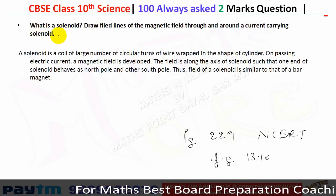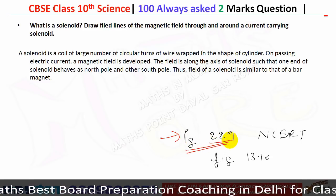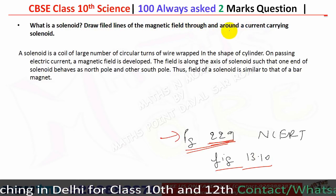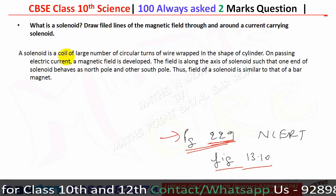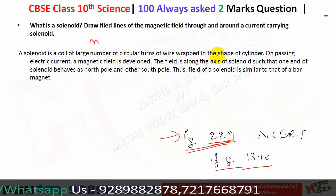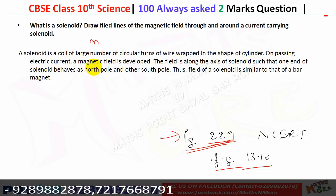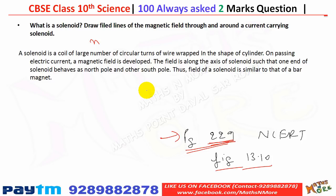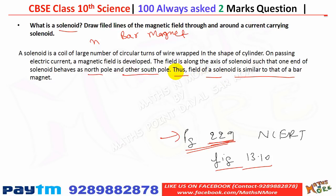A solenoid is a coil of a large number of circular turns (N turns) of wire wrapped in the shape of a cylinder. On passing electric current, a magnetic field is developed. The magnetic field line pattern of a solenoid is the same as that of a bar magnet — the field is along the axis of the solenoid such that one end behaves as a north pole and the other as a south pole.